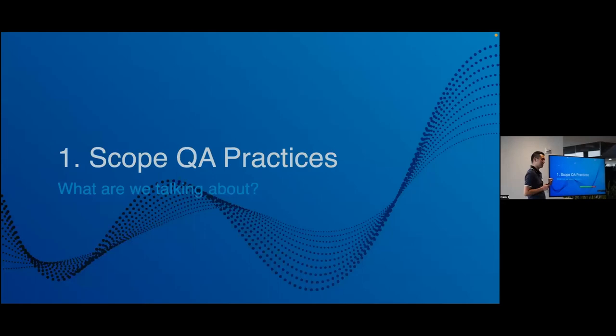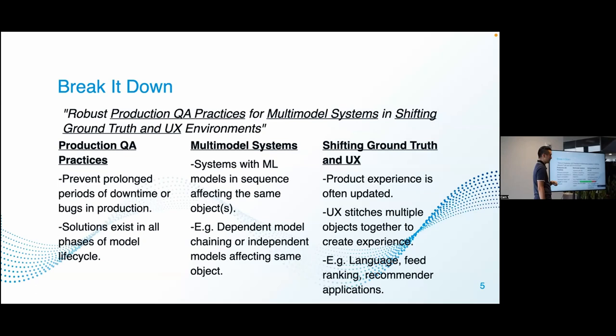I had a really long title: 'Robust Production Quality Assurance Practices for Multi-Model Systems and Shifting Ground Truth and UX Environments.' Let's break it down. Production practices basically means our goal is to prevent prolonged periods of downtime or bugs in production — every system is prone to production issues.